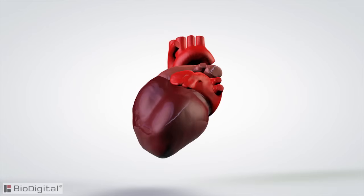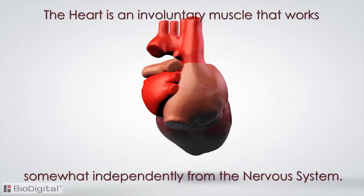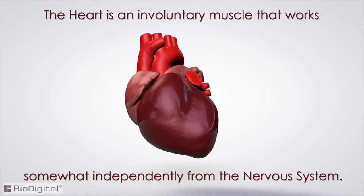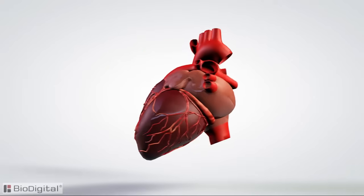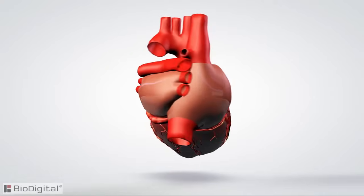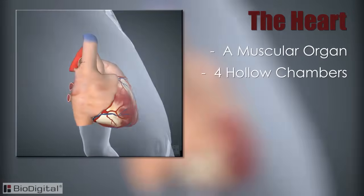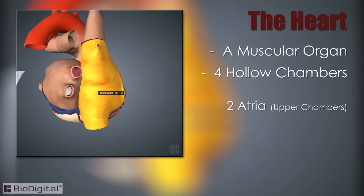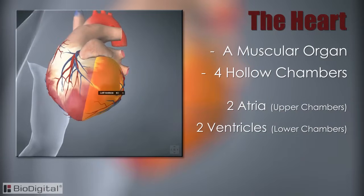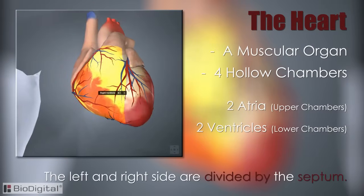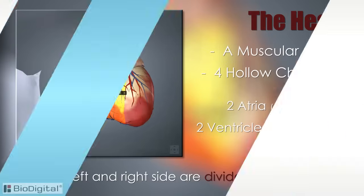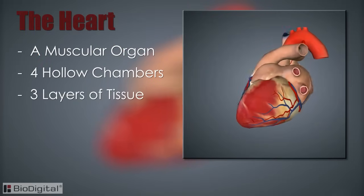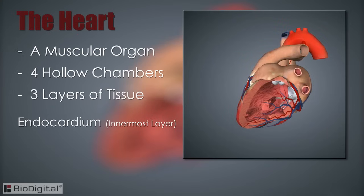The heart is an involuntary muscle that works somewhat independently from the nervous system. The heart is a muscular organ with four hollow chambers — two atria, which are the upper chambers, and two ventricles, which are the lower chambers. The left and right sides of the heart are divided by the septum.